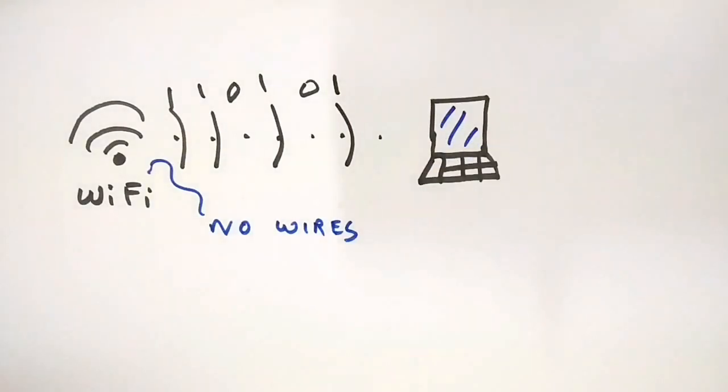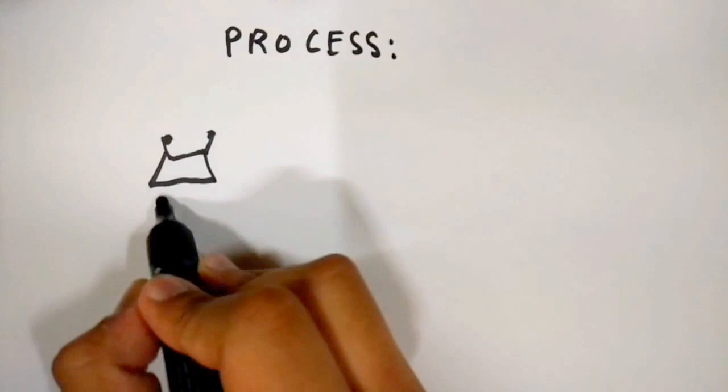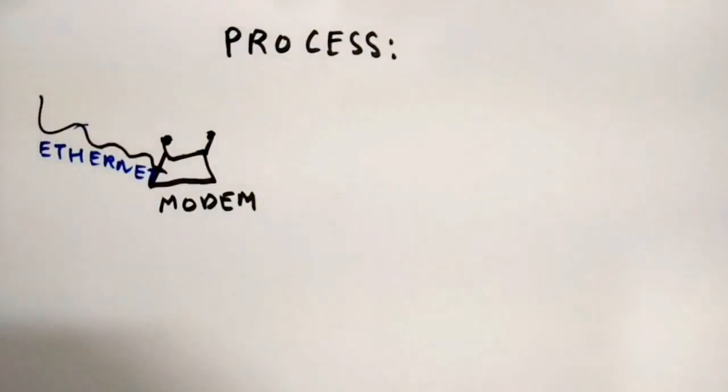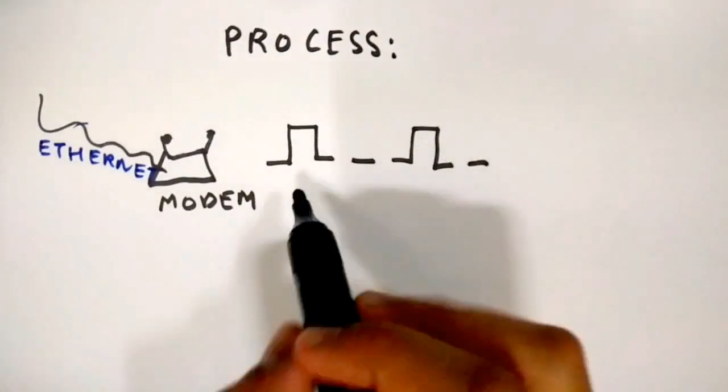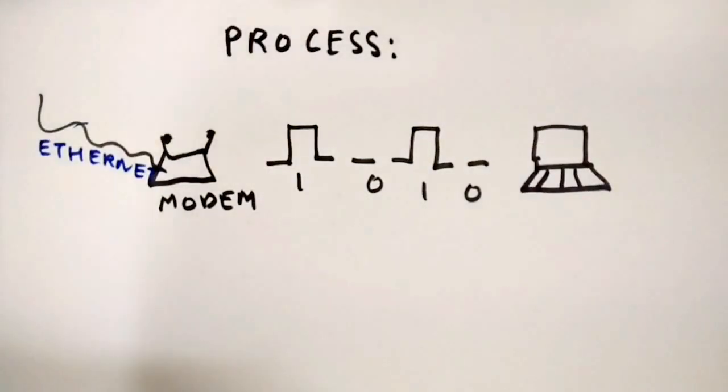Here's the step-by-step process of communication. Binary data from the internet comes to the Wi-Fi router via an Ethernet connection. The router or modem then converts this 1 and 0 binary data into high and low pulses of electromagnetic waves. These wave pulses are received by a computer or smartphone's wireless adapter.